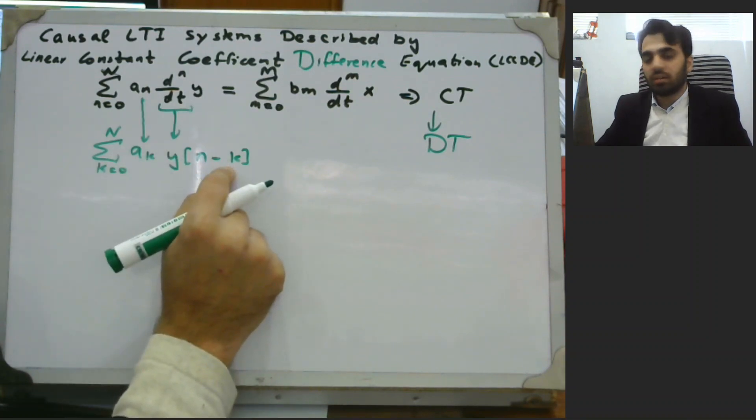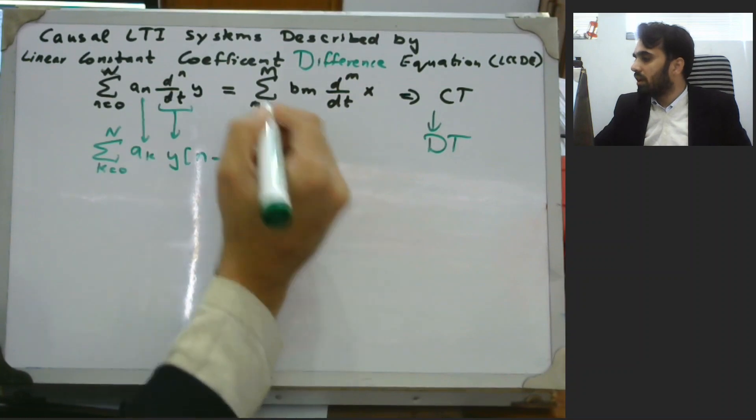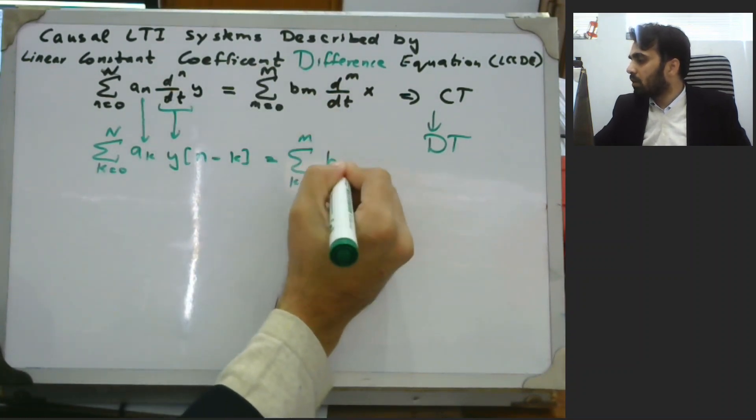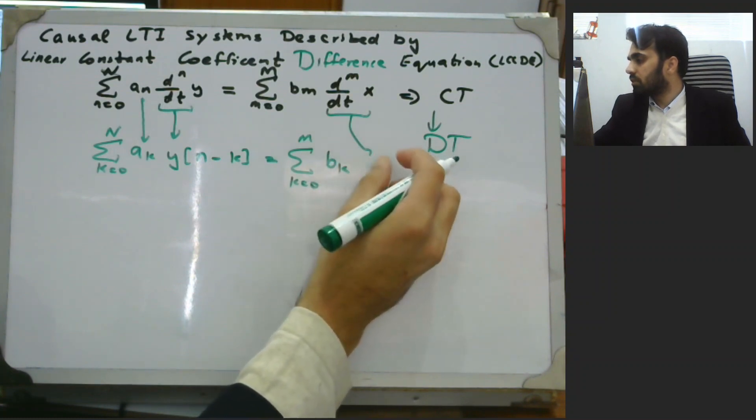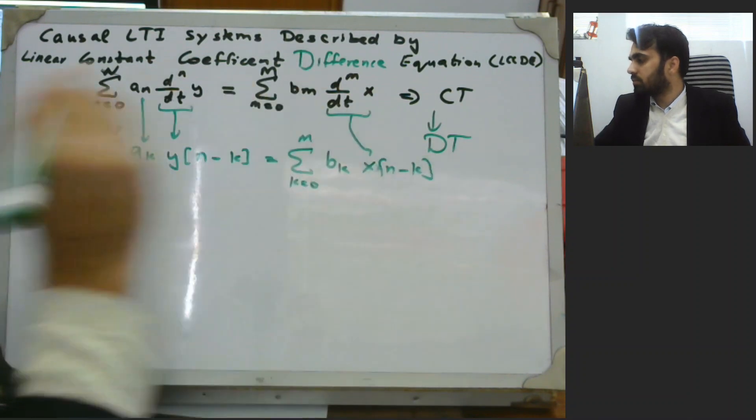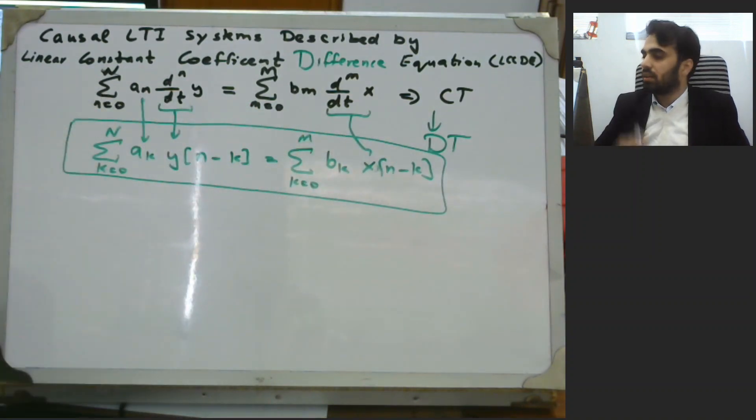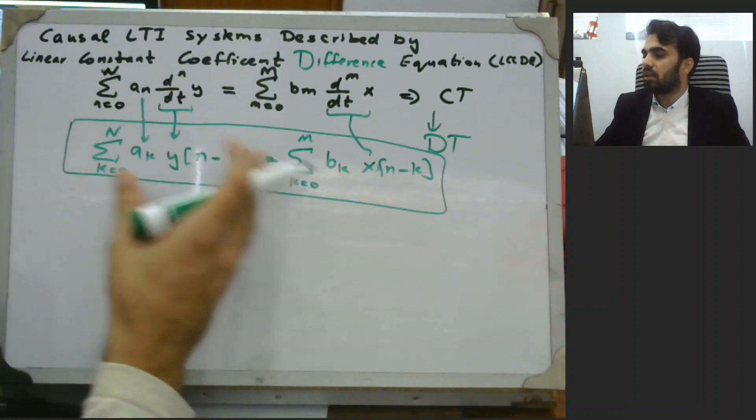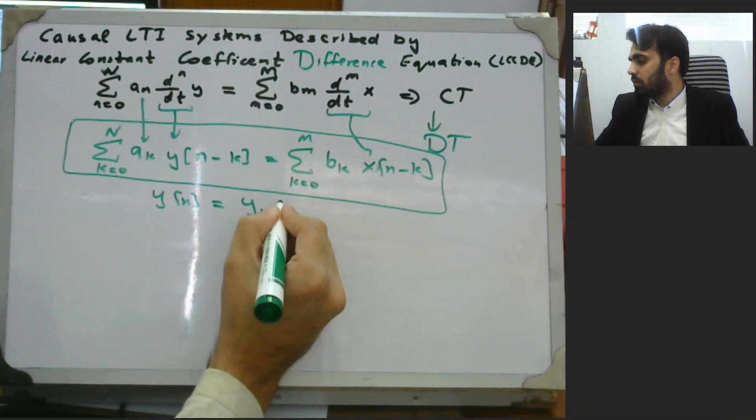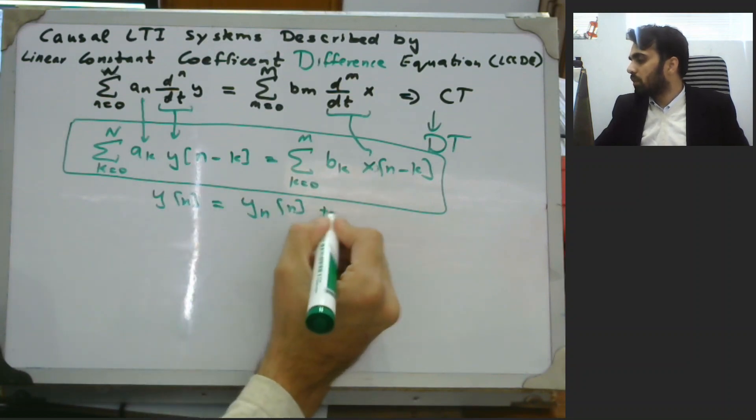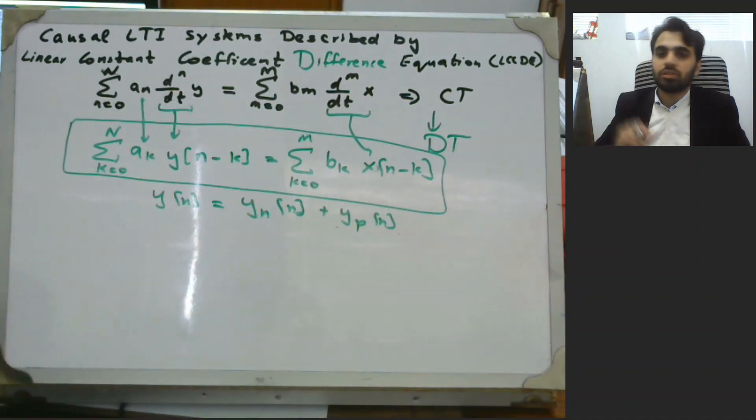And this k is giving a delay, n minus k. So if k is one, one unit delay and onwards. This is equivalent to a summation from k=0 to capital M of constant coefficients b_k, and the differential would change to difference equation, that is x of n minus k. This is our linear constant coefficient difference equation of nth or mth order, depending on the value where that n is greater than m or m is greater than n. So again the solution of this can be in terms of y_h of n, that is the homogeneous solution, plus y particular solution. For this we set the input equal to 0, and the particular solution also satisfies the given difference equation.